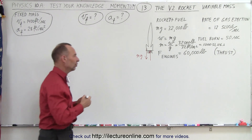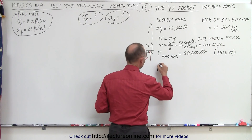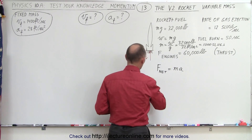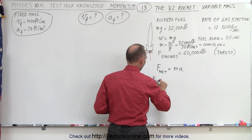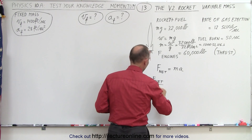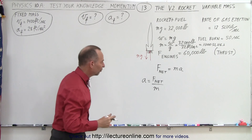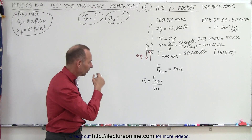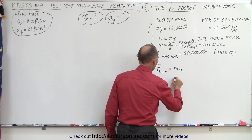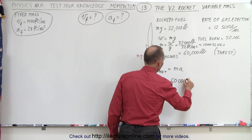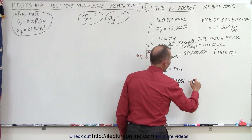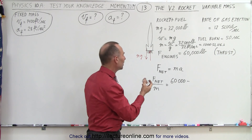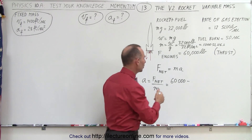So what we're going to do is start with F net equals mass times acceleration, or the acceleration equals the net force divided by the mass. Now the net force is going to be the thrust of the engines minus the weight of the rocket — that's going to be equal to 60,000 pounds minus the weight of the rocket. The weight of the rocket is going to be changing over time.